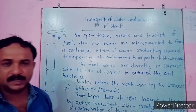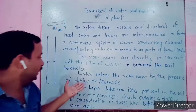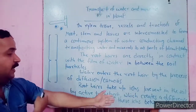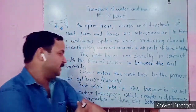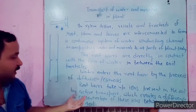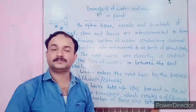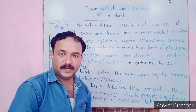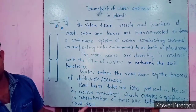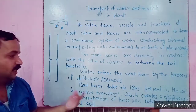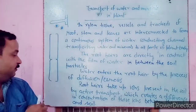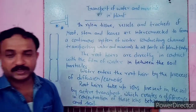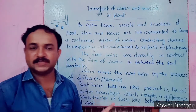Water enters the root hair by the process of osmosis. Root hair also takes up ions present in the soil — such as calcium, zinc, phosphate, and nitrate ions — by active transport. The root hair actively absorbs these ions from the soil using energy expenditure.